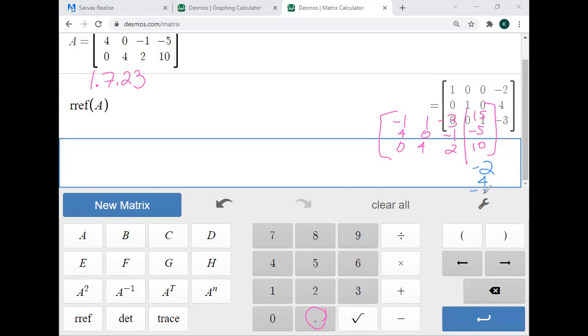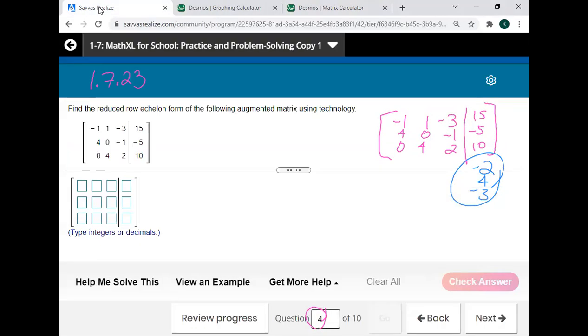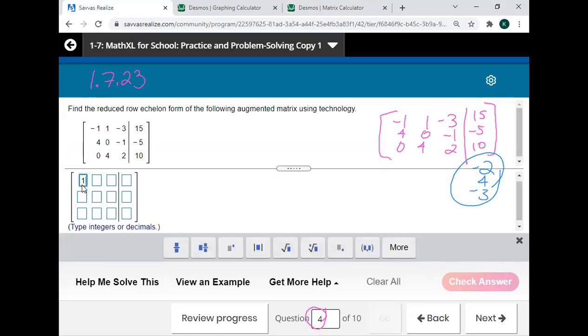So it was negative two, four, negative three that I need when we now hop back to Canvas. We're going to put one, zero, zero, negative two in the first row.